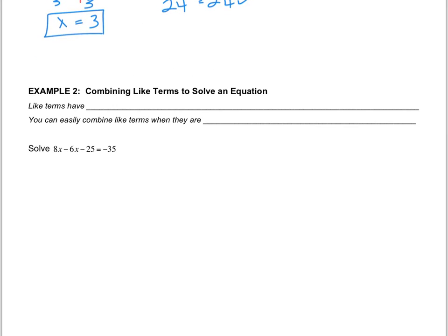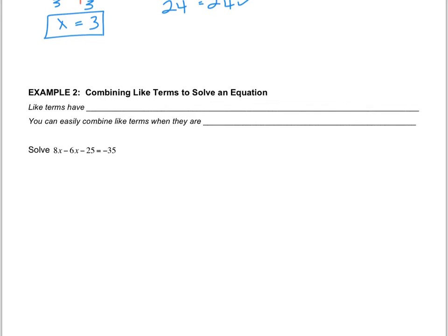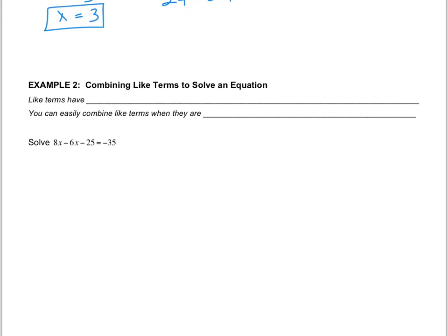In example 2 we're going to look at an equation that has things that you need to do before you start doing your inverses, and one thing that you're going to look for are these things called like terms. This should be a refresher from seventh grade where you combine like terms. Like terms have the same variable and exponent.